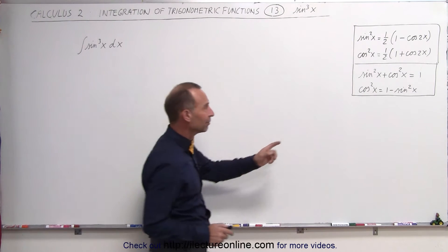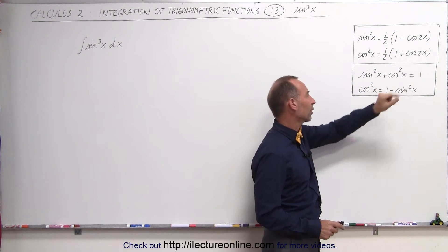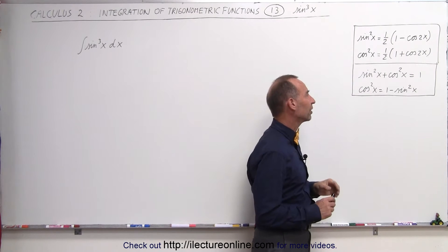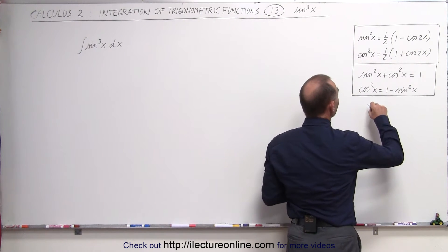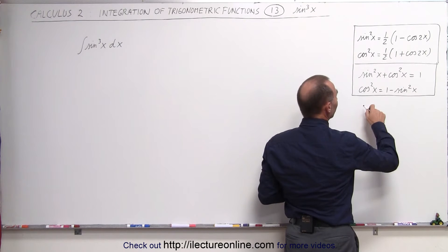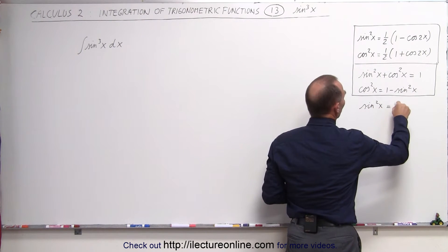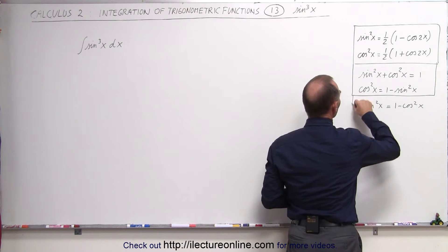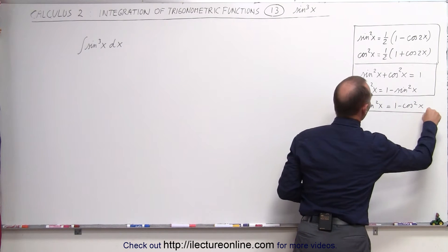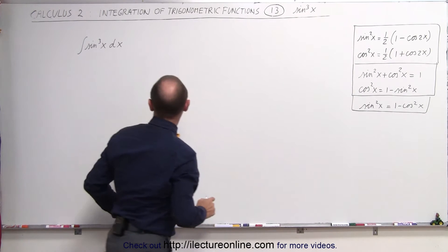For that we use the relationship that sine squared of x plus cosine squared of x equals 1. That means we can also write sine squared of x as 1 minus cosine squared of x, and we're going to use this as a technique to solve for this integral.